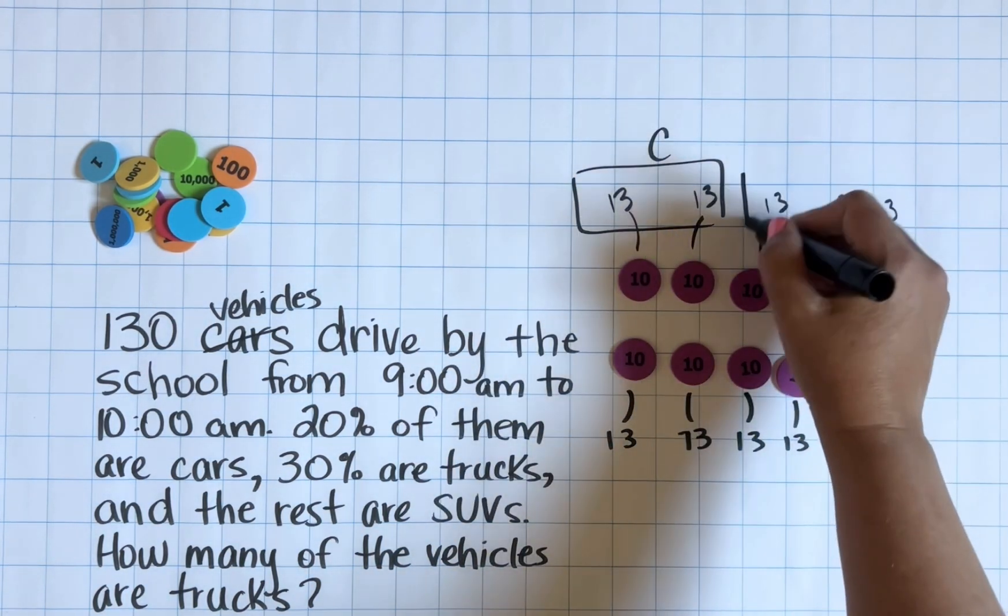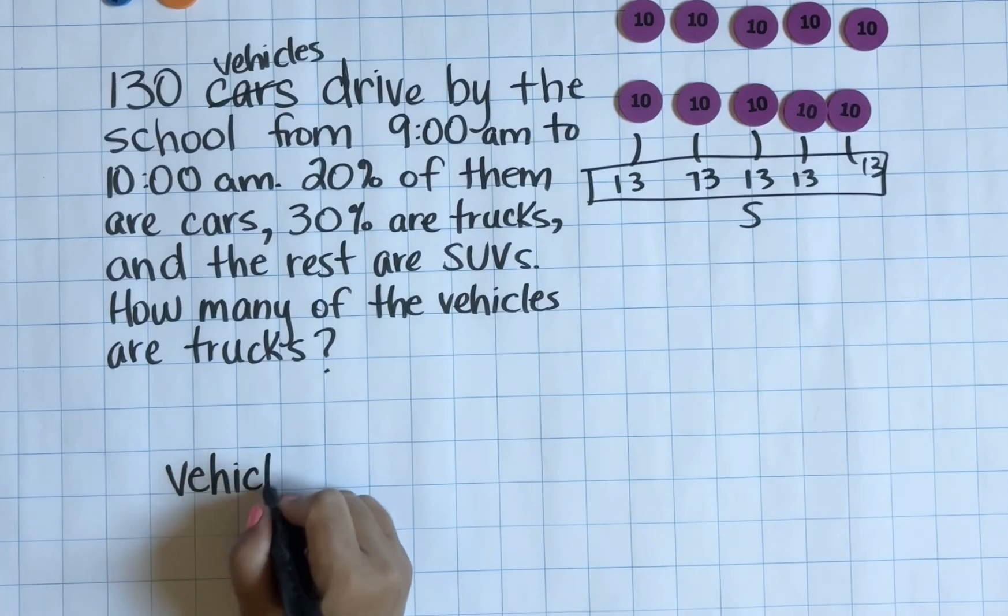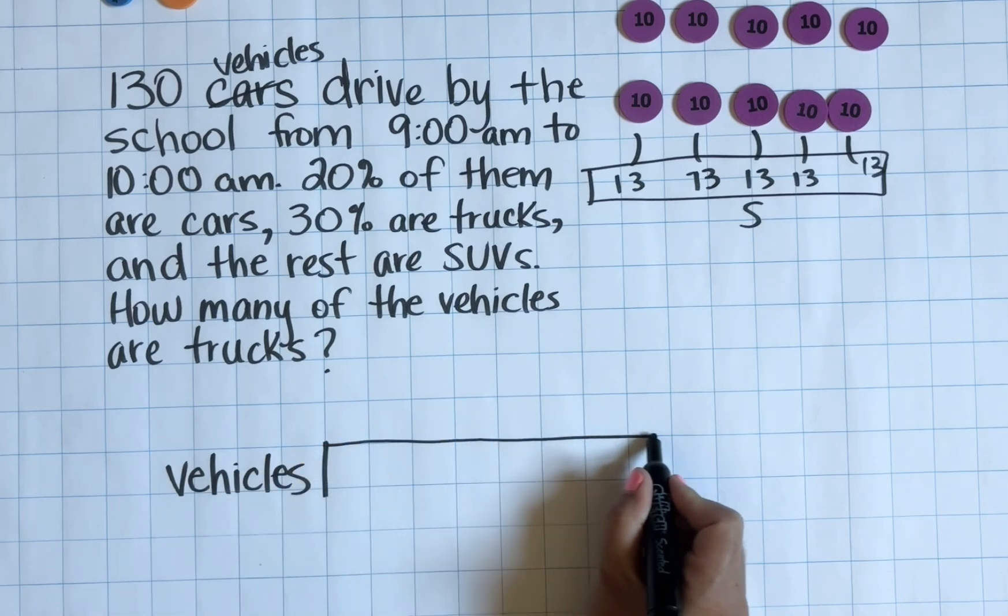Now we can use our place value disks to figure out the cars, the trucks, and the SUVs, and we can determine the number of trucks from there.